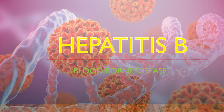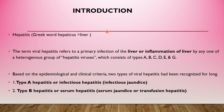Hi everyone. Now we are going to discuss about hepatitis B, which is one of the blood-borne diseases. The word hepatitis is derived from the Greek word hepaticus, which means liver. The term viral hepatitis refers to the primary infection of the liver, or any infection of the liver leading to inflammation of the liver.